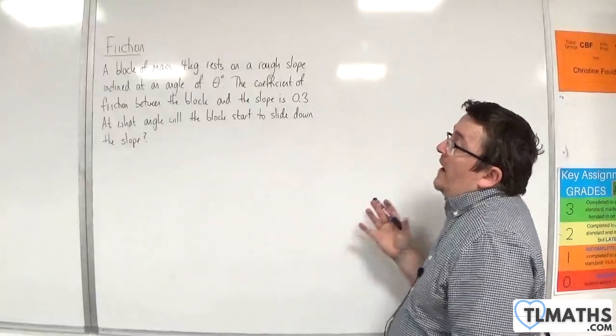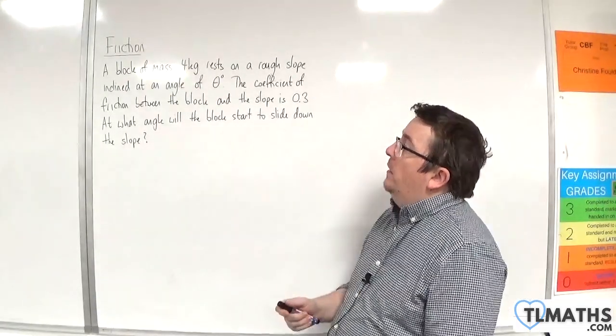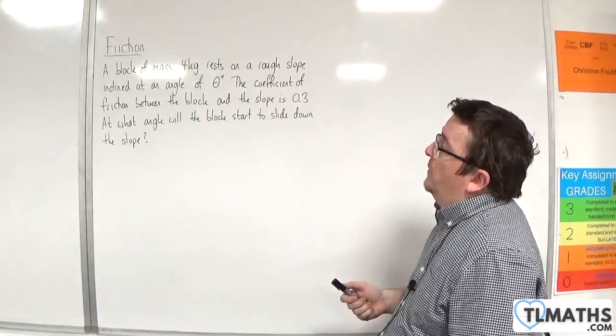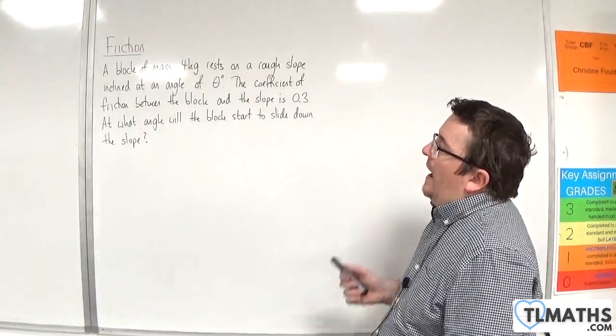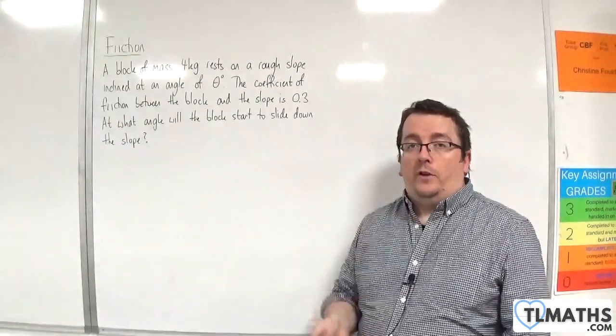In this problem, we have a block of mass 4 kilos rests on a rough slope inclined at an angle of theta degrees. The coefficient of friction between the block and the slope is 0.3. At what angle will the block start to slide down the slope?